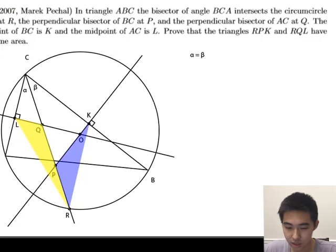Next, since the two perpendicular bisectors meet at the circumcenter of ABC, this means that we can draw the point O, which is the circumcenter.